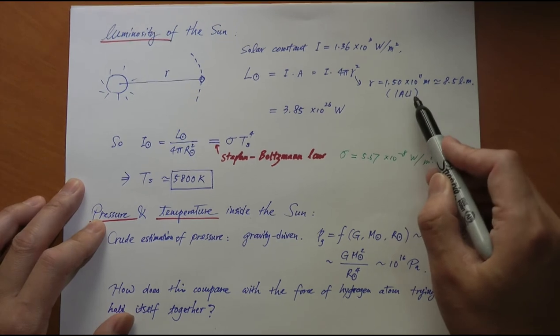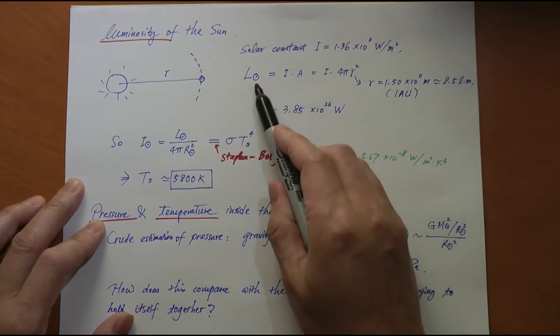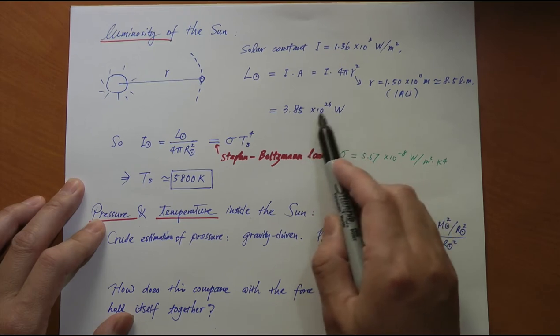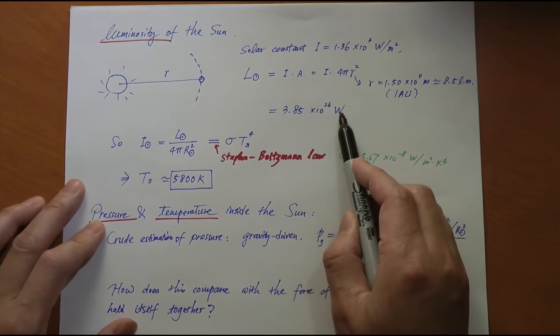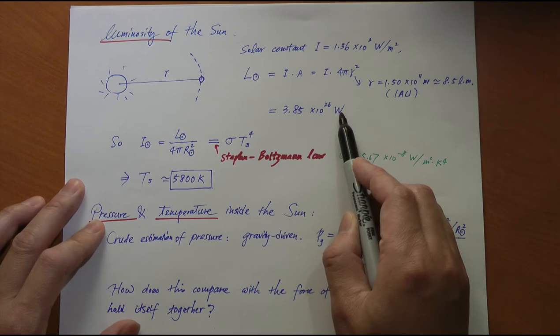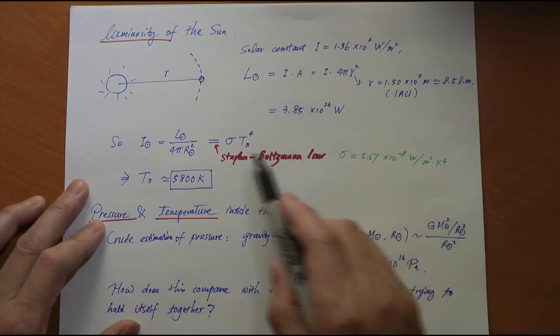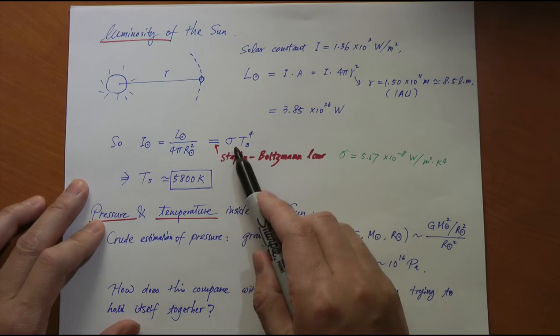It turns out that the luminosity of the sun is 3.85 times 10^26 watts. On the other hand, if we approximate the sun as a 5,800 Kelvin black body, we can use the Stefan-Boltzmann law to calculate the luminosity.